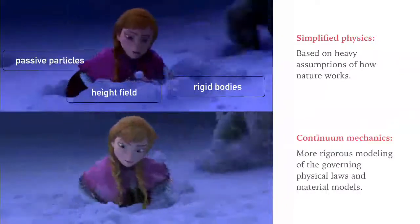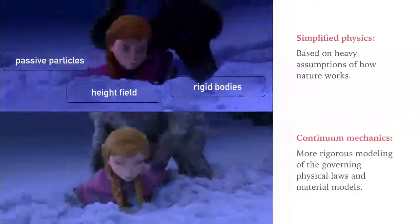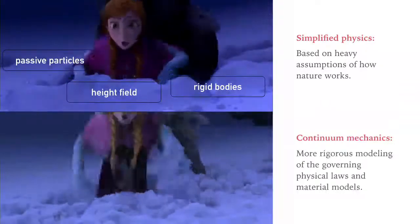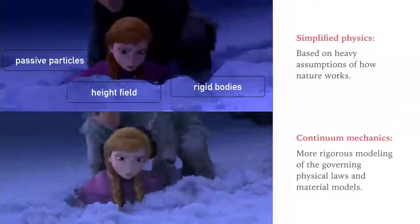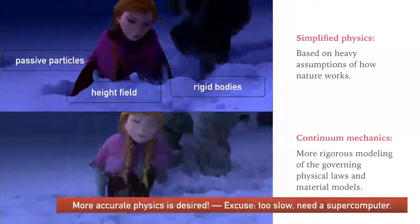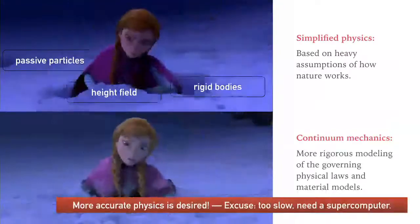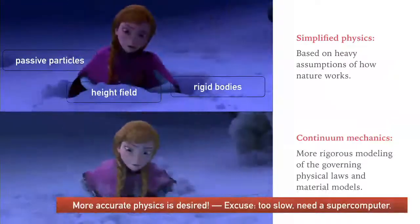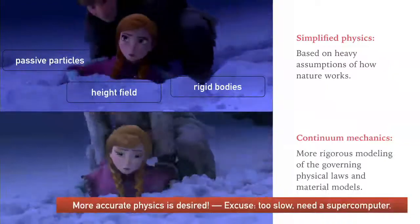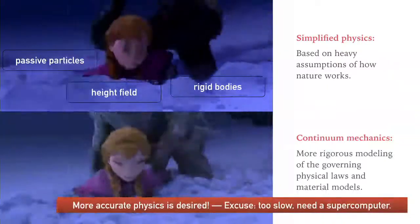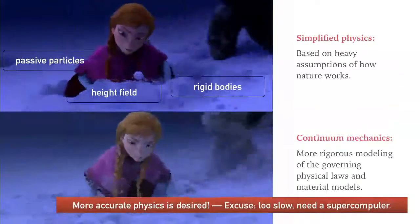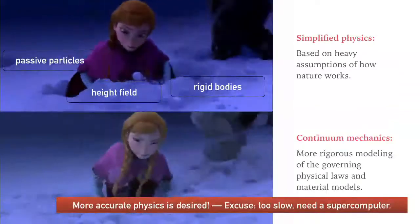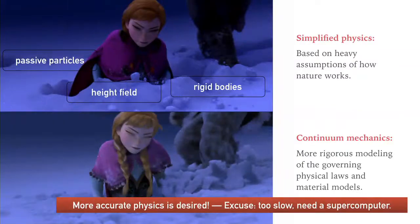This requires doing physics rigorously, like computational physics research. A common excuse graphics people use is that accurate physics simulation requires a supercomputer and military funding — Disney certainly doesn't have that money; they have just normal workstations, PCs, and artists. So that's a common excuse.